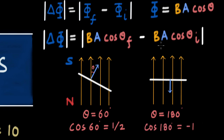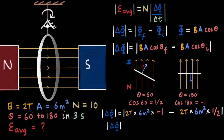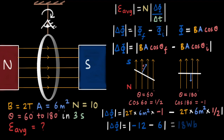At θ = 60°, cos θ = 1/2, and at θ = 180°, cos θ = −1. Plugging in: final flux = 2 × 6 × (−1) = −12 Wb, and initial flux = 2 × 6 × (1/2) = 6 Wb. So delta phi = −12 − 6 = −18 Wb, and taking the magnitude gives 18 Webers. The average induced EMF is then 10 × 18 / 3 = 60 volts.